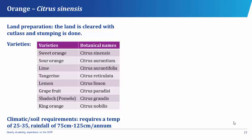We have the sweet orange — Citrus sinensis; the sour orange — Citrus aurantium; the lime — Citrus aurantifolia; the tangerine — Citrus reticulata; the lemon — Citrus limon; the grapefruit — Citrus paradisi; the shaddock also known as pomelo — Citrus grandis; and the king orange — Citrus nobilis.